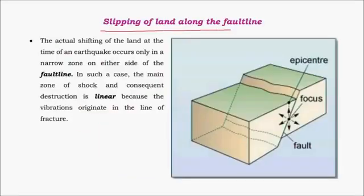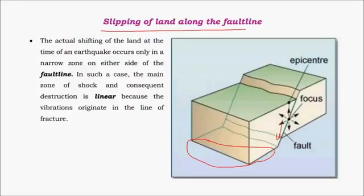Slipping of land along fault lines is also a major reason behind earthquakes. This kind of faulting happens mainly during the formation of block mountains, or when the mass below the earth's crust undergoes metamorphosis due to high heat and change in densities, causing a block to slide and creating earthquakes. Earthquakes along fault lines are linear — they occur along the fault line.